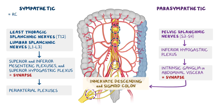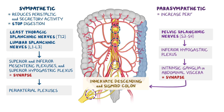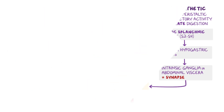Sympathetic innervation reduces peristaltic and secretory activity to stop digestion, while parasympathetic increases peristaltic and secretory activity, facilitating digestion. There are also autonomic visceral afferent fibers, which conduct reflex and pain sensations for the large intestine. Reflex sensation always follows parasympathetic fibers. The visceral afferents for pain nerve fibers can differ depending on if they are sensing above or below the pelvic pain line.